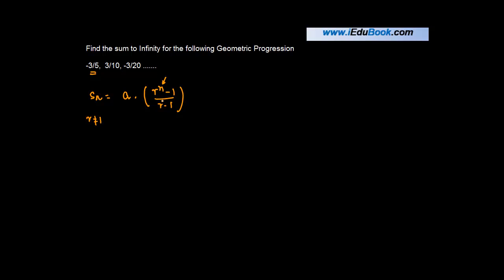But in this case, we do not know the value of n because it's tending to infinity. So in these cases, the formula for the sum of an infinite GP is given as a upon 1 minus r.